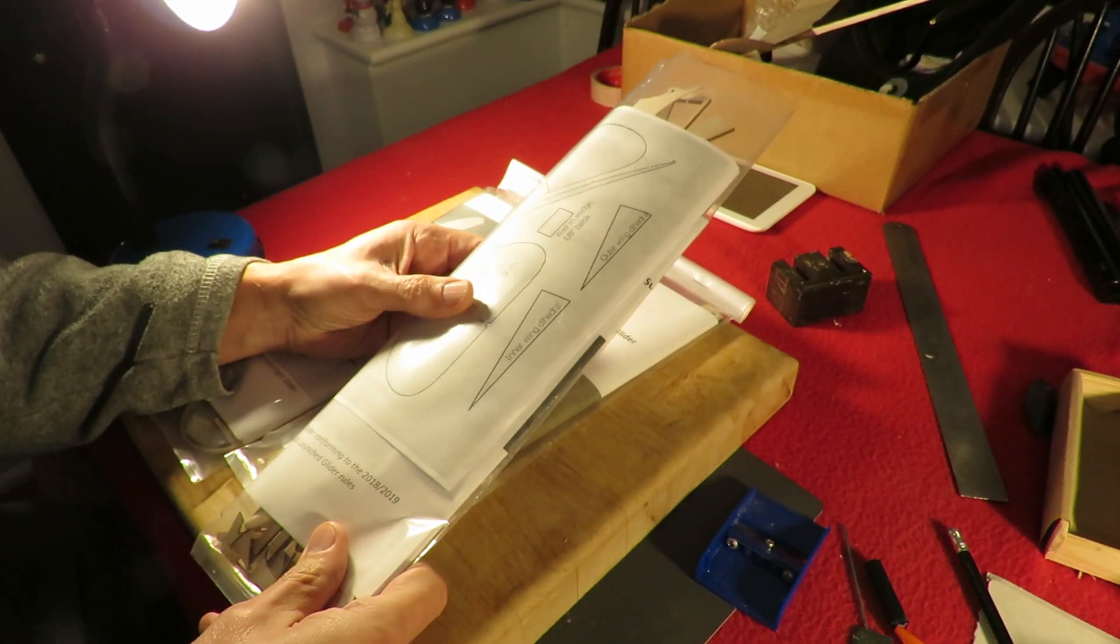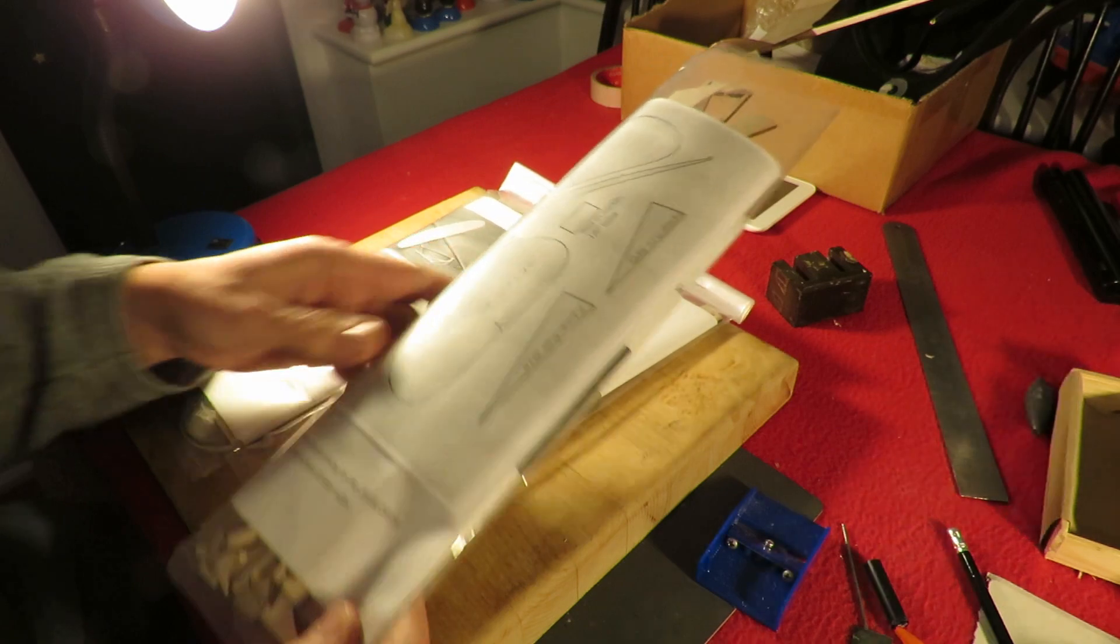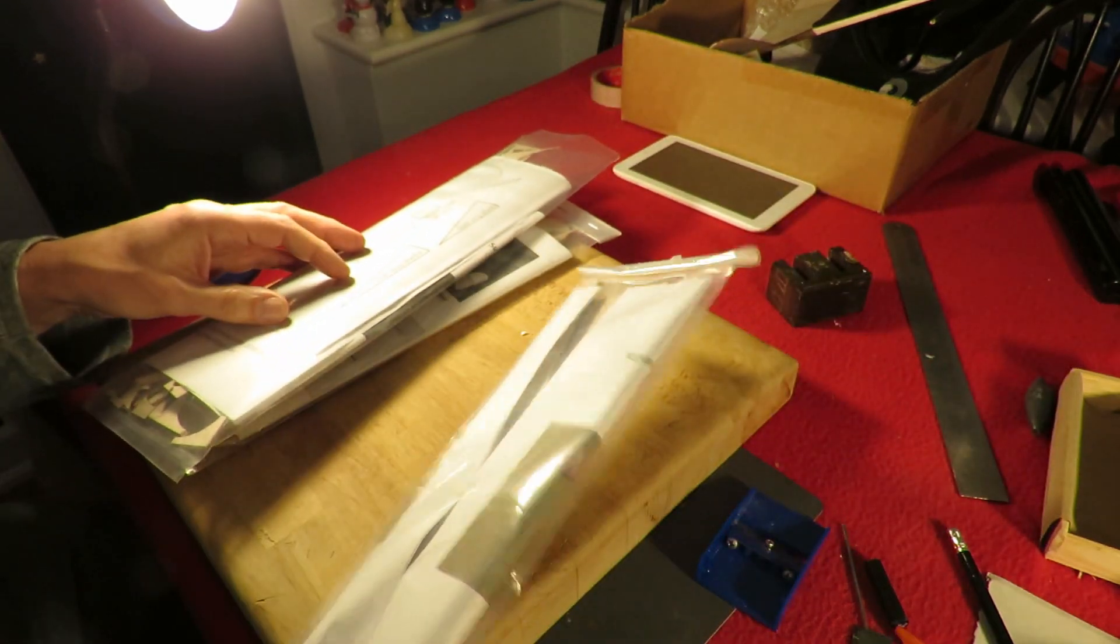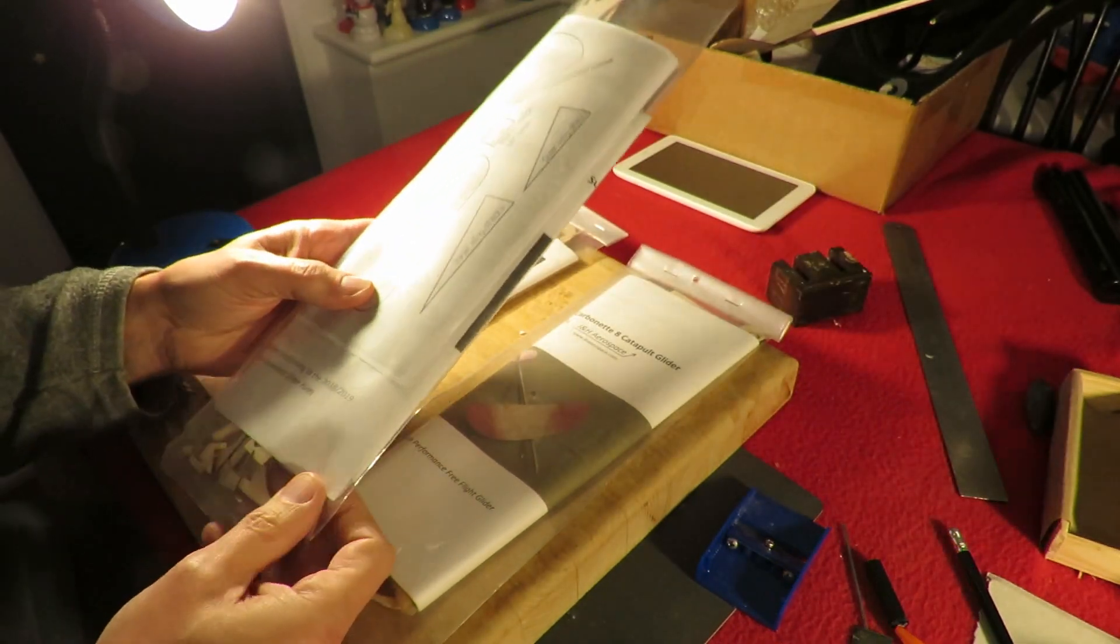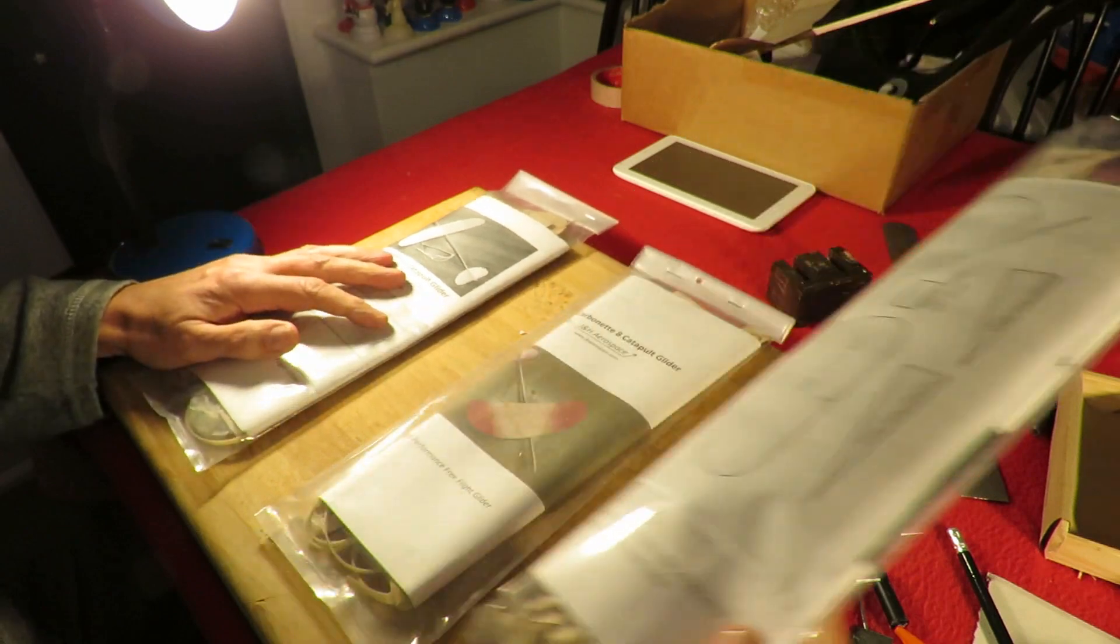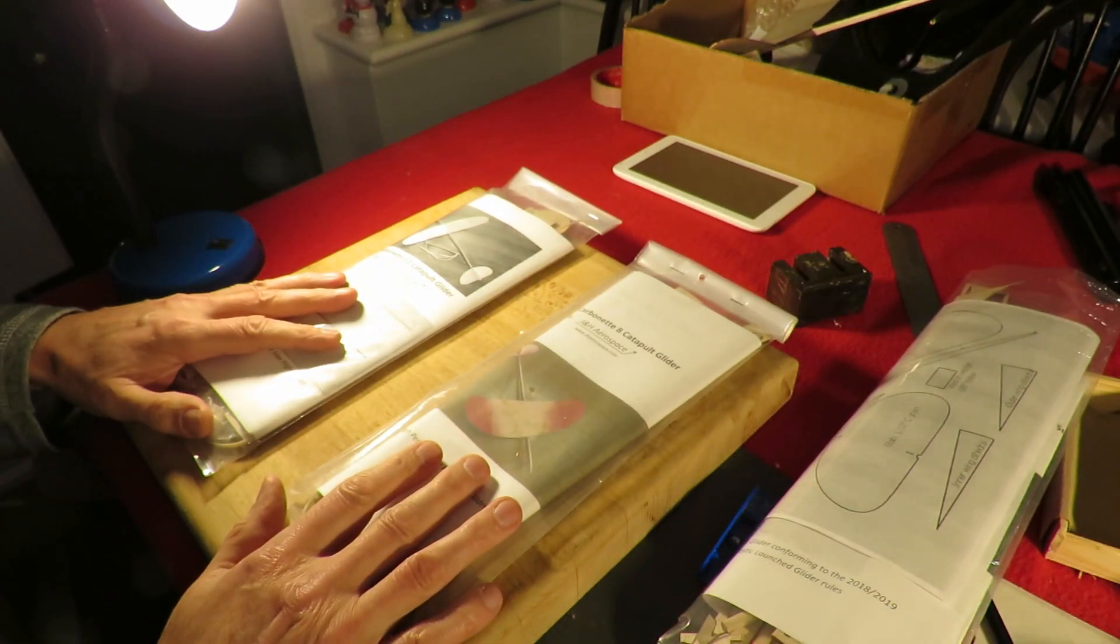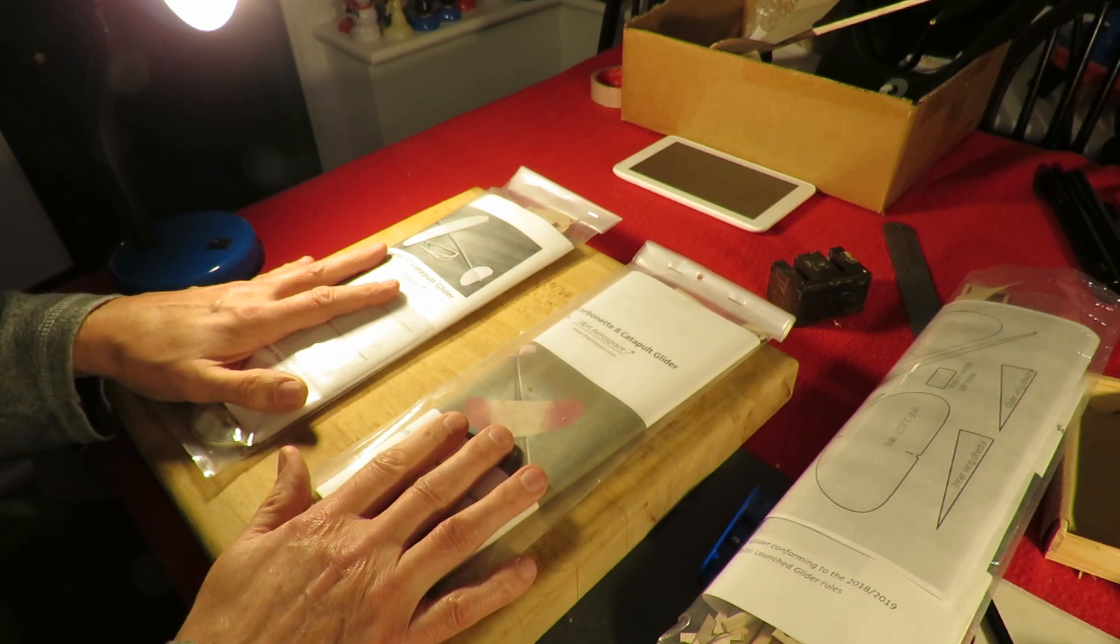One of the packets was empty, well virtually empty. It was the one I'd already opened and made a Carbonette 8. I'd obviously put the scraps back in the packet and left it in the box. So when I came to start all over again I thought I had two 12s and two 8s but I didn't.